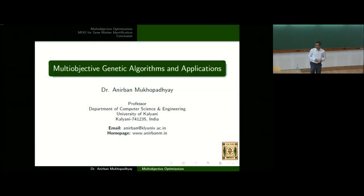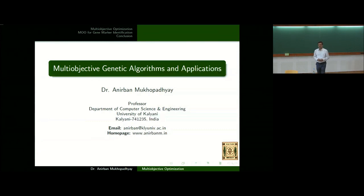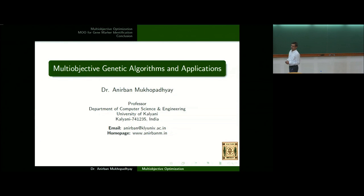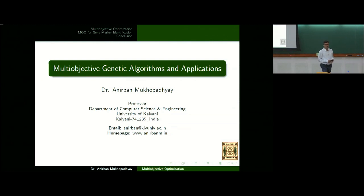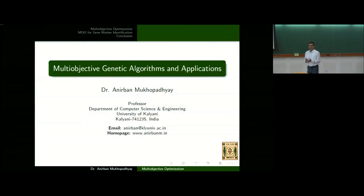Good morning. Yesterday, we talked a lot about single-objective genetic algorithms. But unfortunately, most of the real-life optimization problems are multi-objective in nature. For example, the DSP problem we were discussing can be easily considered as a multi-objective optimization problem because we may want to minimize the cost as well as minimize the time. And most of the cases, these objective functions are contradictory in nature.